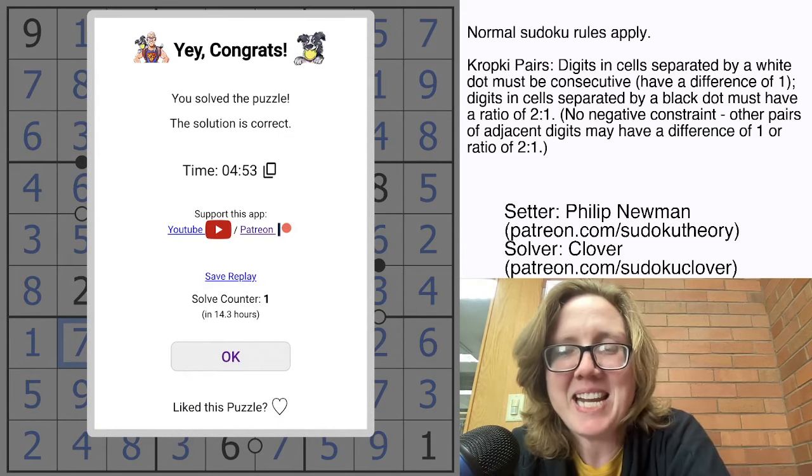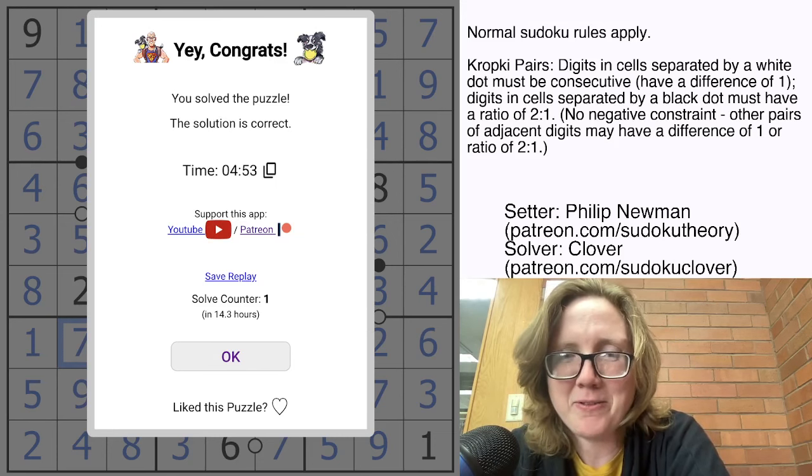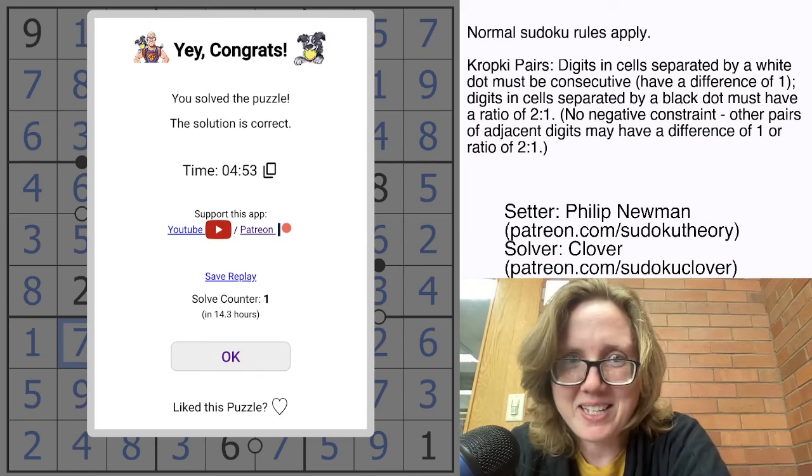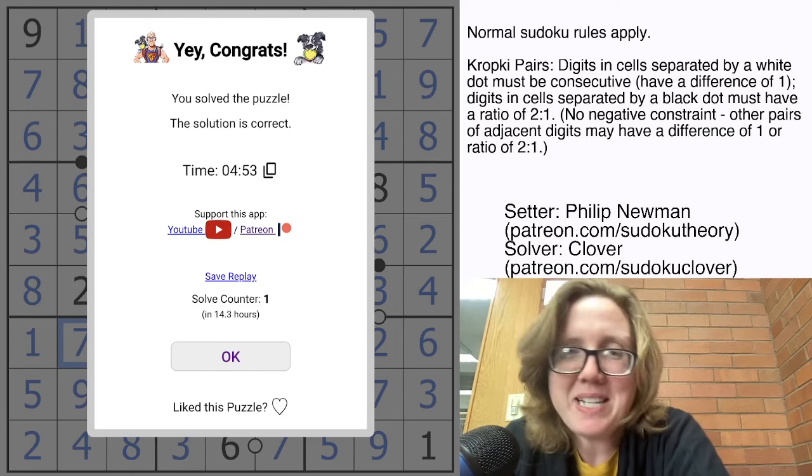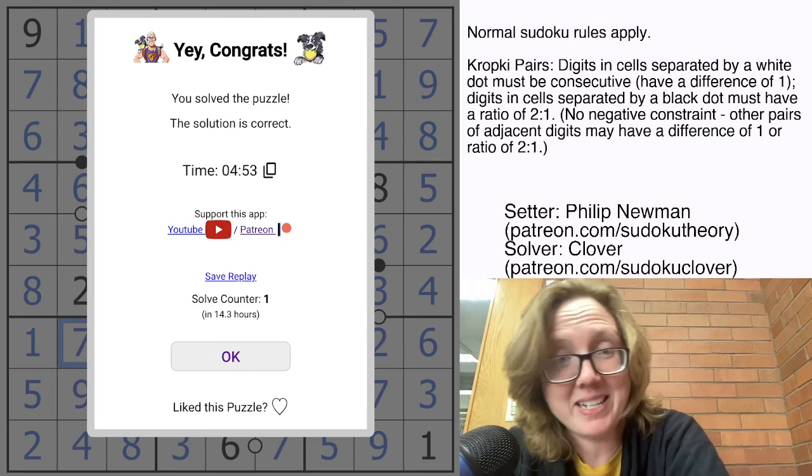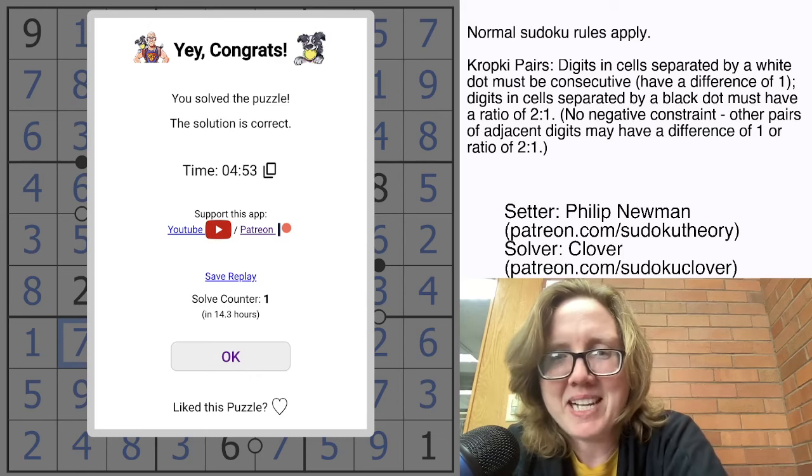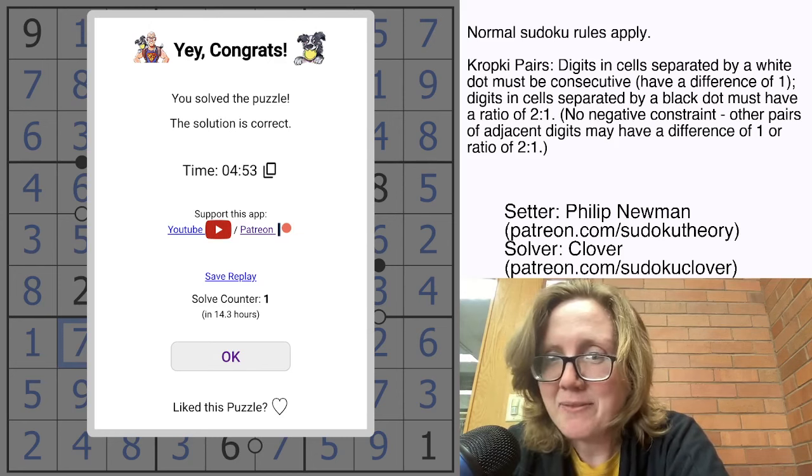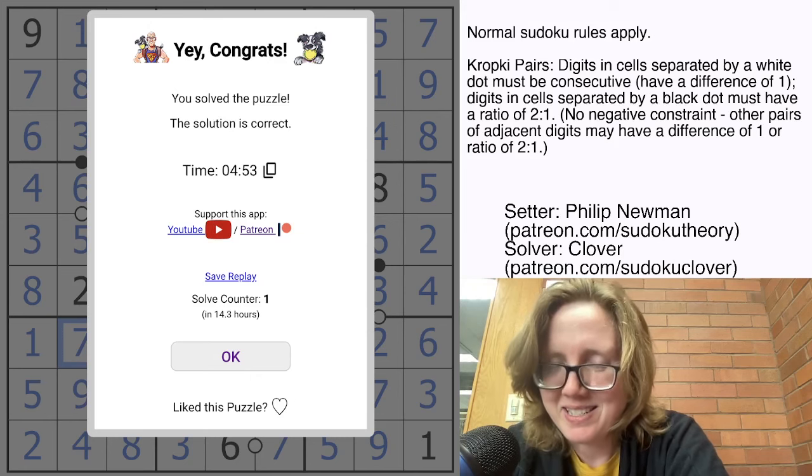That is how you solve Philip Newman's Andromeda. Hope you guys enjoyed that. I really like a good Kropke pairs Sudoku. It is one of my favorite kind of standard Sudoku contest variants that you see a lot. More commonly in contests, you'll see it as Kropke, so it'll have a negative constraint. We tend to go for the non-negative constraint version of Kropke pairs, just because that's a little bit easier to get your head around. Anyways, thank you for watching. If you enjoyed that, go ahead and click that subscribe button or leave a comment. See you next time.